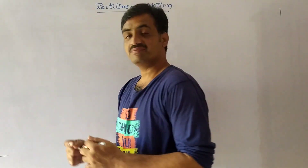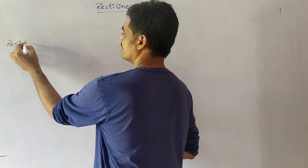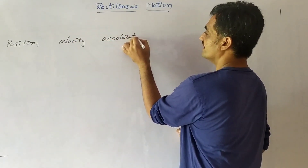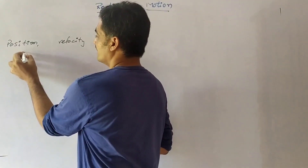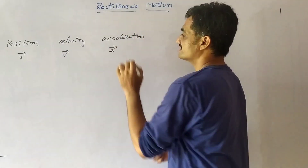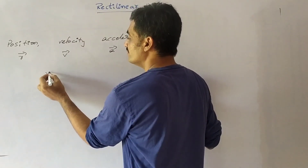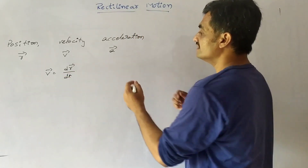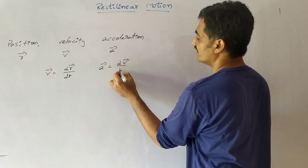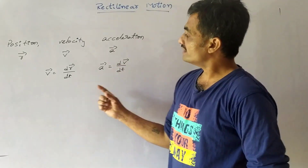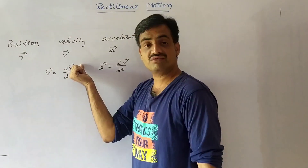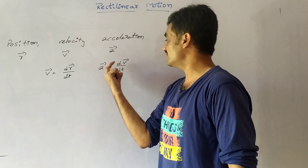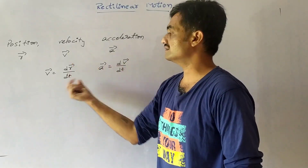Rectilinear motion can be represented based on position, velocity, and acceleration. The position is represented as r̄, velocity as v̄, and acceleration as ā. We know that velocity v̄ = dr/dt, and acceleration ā = dv̄/dt. So velocity is the rate of change of displacement, and acceleration is the rate of change of velocity.